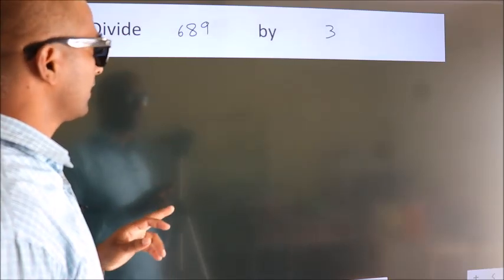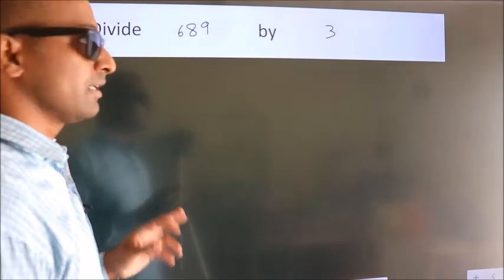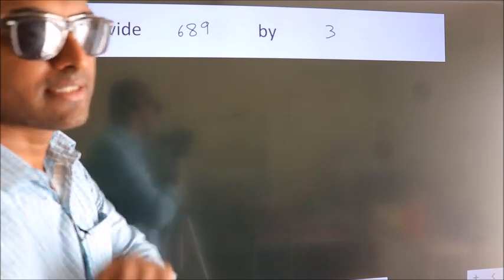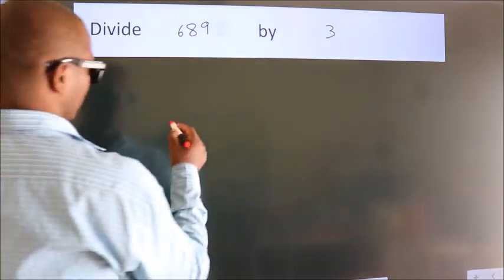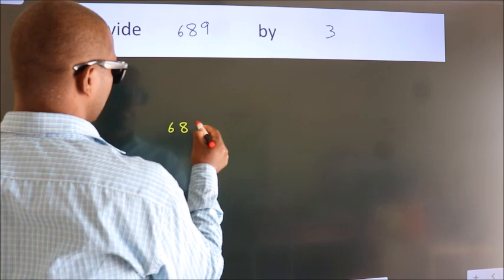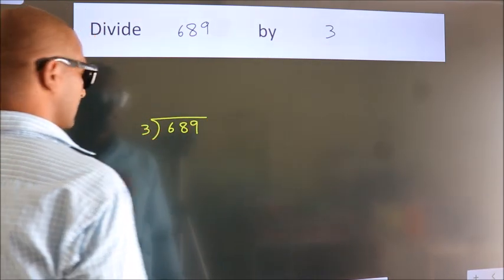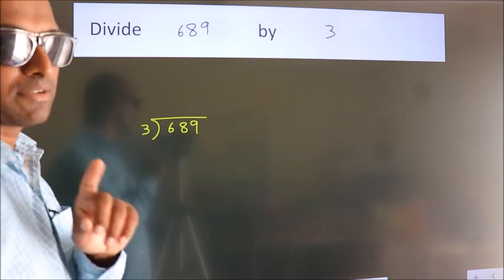Divide 689 by 3. To do this division, we should frame it in this way: 689 here, 3 here. This is your step 1.